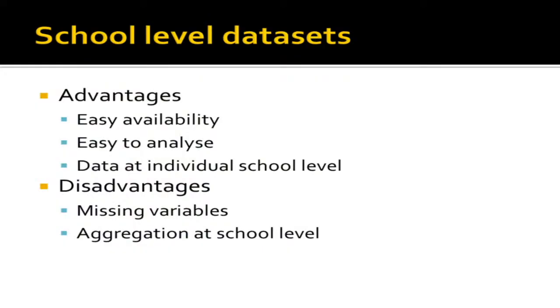These data sets are easy to get hold of and easy to analyse, giving individual school data for interesting comparisons. However, there are a lot of missing variables — we don't have good data on socio-economic status. There's also an aggregation problem: the variance within a school is larger than the variance between schools, and you can't see differences in performance of different groups within a school. It's limited data, but useful for setting context for case study research.